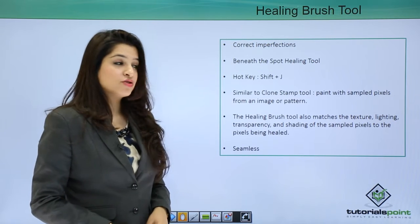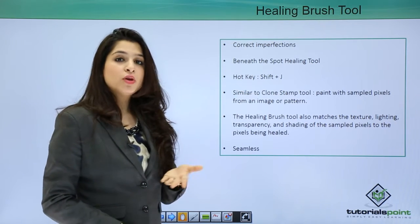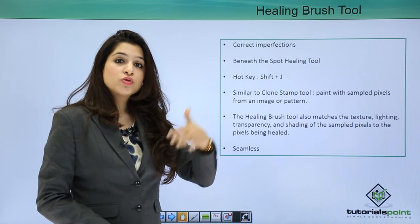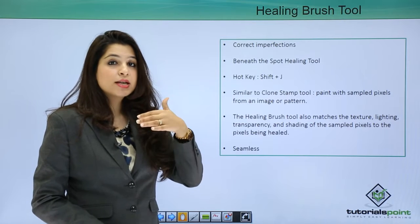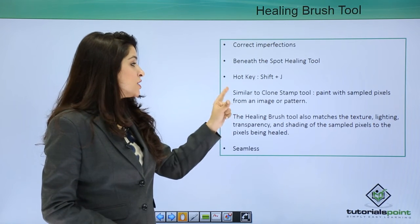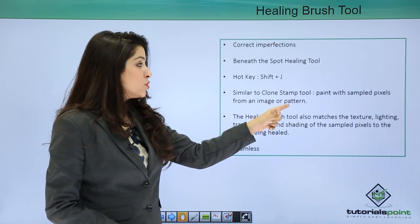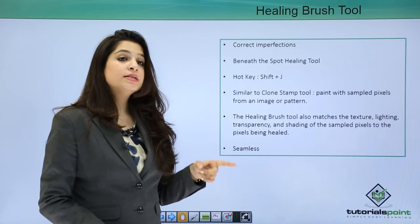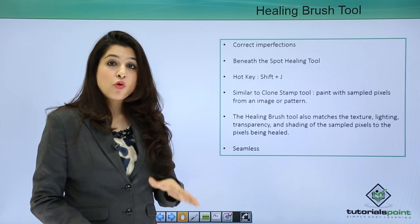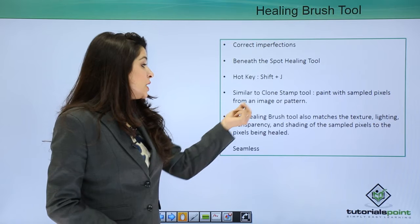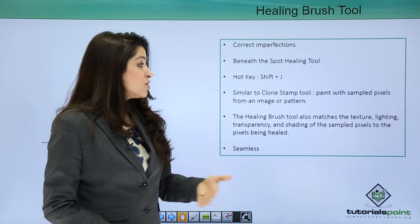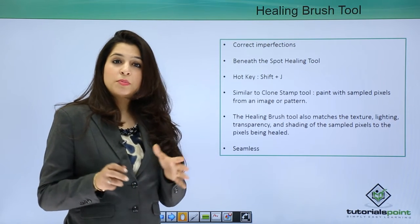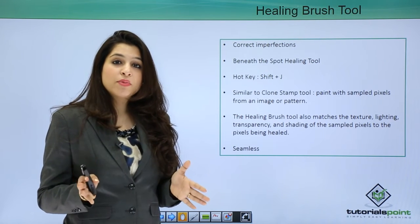The hotkey is Shift+J — to move between the Healing Brush and Spot Healing Brush tools, we use the Shift key. It's very similar to the Clone Stamp Tool, as we covered in the previous tutorial. The Clone Stamp Tool also paints sampled pixels over the area you wish to fix. The Healing Brush Tool goes further and matches the texture, lighting, and shading of the pixels that need to be healed, so the correction appears seamless.